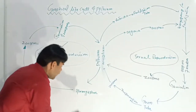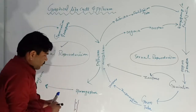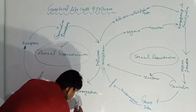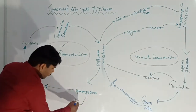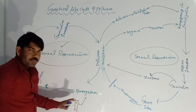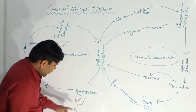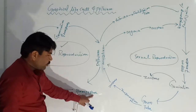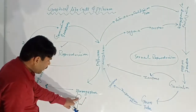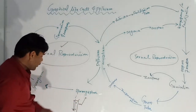This branch is known as a sporangiophore. The sporangiophore is a portion that cuts off a section and makes a sporangia. So this portion — from here up to here — is known as the sporangiophore, and the sporangiophore gives rise to the structure known as sporangia.